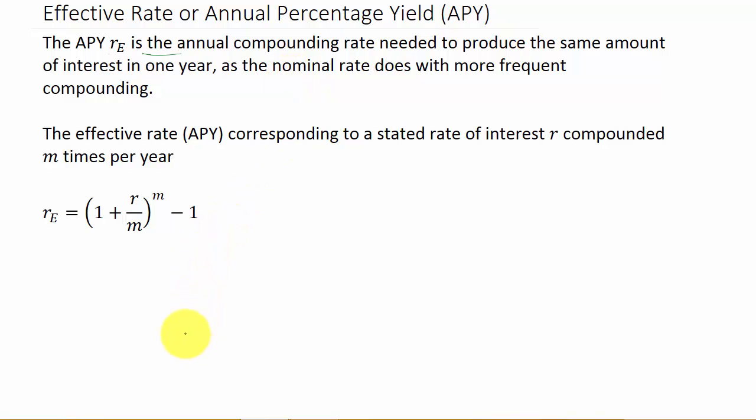So what that is, say you put some money in the bank and let's say it's 6% interest compounded monthly for one year. So what this does is tell us the interest rate we need for annual compounding to produce the same amount as this does. I hope that makes sense.